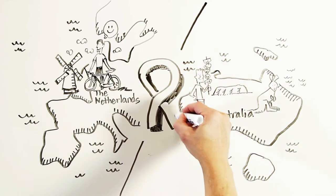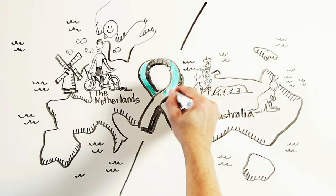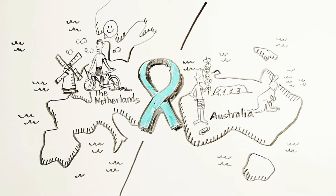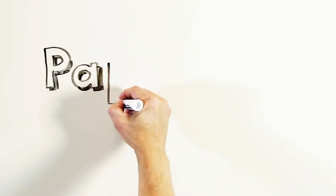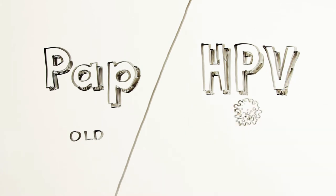Both Australia and the Netherlands have implemented changes to their national cervical cancer screening programs to further reduce cervical cancer rates in their countries. Both countries have decided to switch from PAP to HPV primary screening to detect the virus that causes cervical cancer.